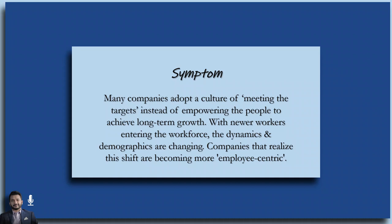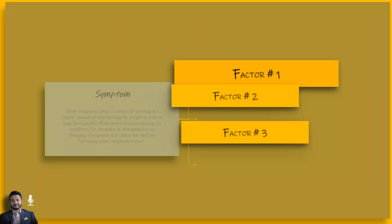Let's start with the symptom, the fact that many companies adopt a culture of meeting targets instead of empowering people to achieve long-term growth. With newer workers entering the workforce, the dynamics and demographics are changing. Companies that realize this shift are becoming more employee-centric. To understand the symptom, let's break it into three leading factors.